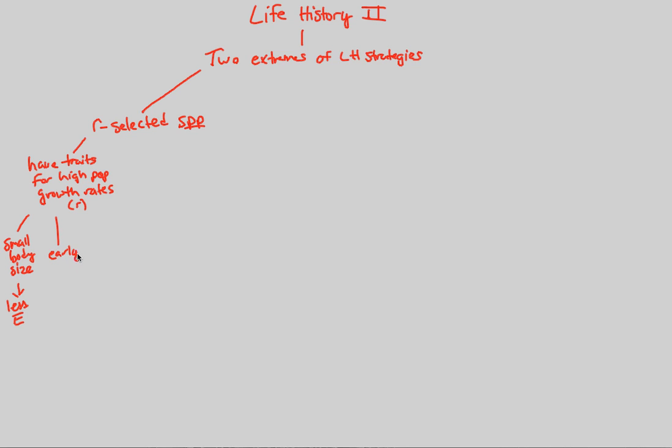In addition, things like early maturity, meaning early reproductive age and reproductive capabilities, are seen in R-selected species. Usually we also have large broods, which is simply a large amount of offspring. That's another trait seen in high population growth rate R-selected species. In addition, we also see little to no parental care in these R-selected species.